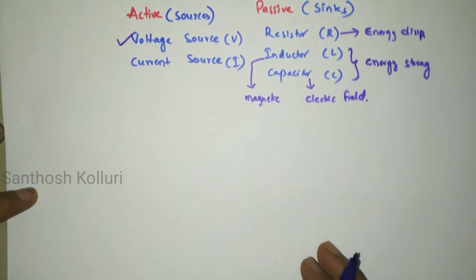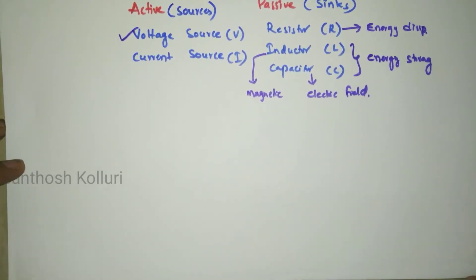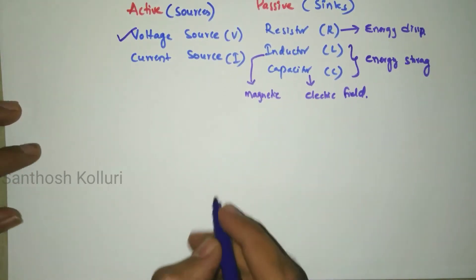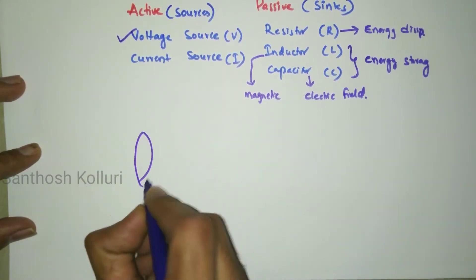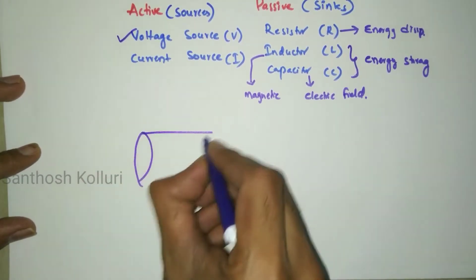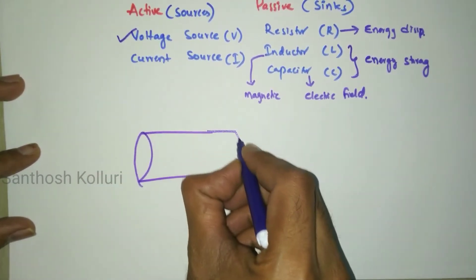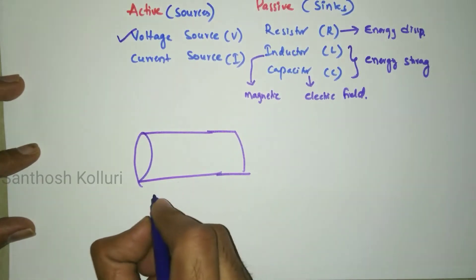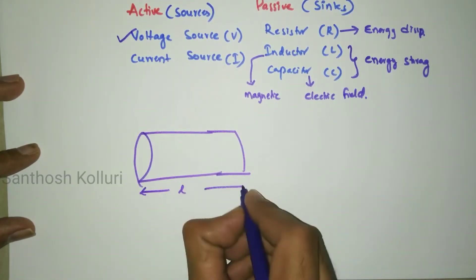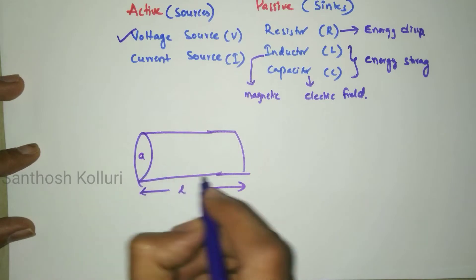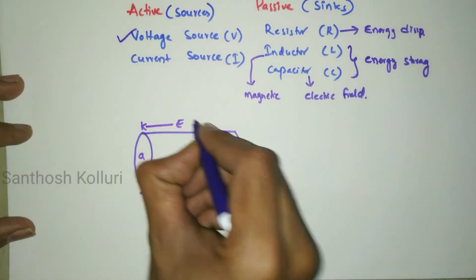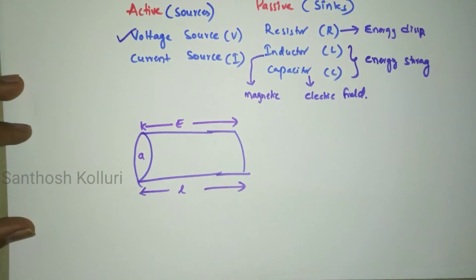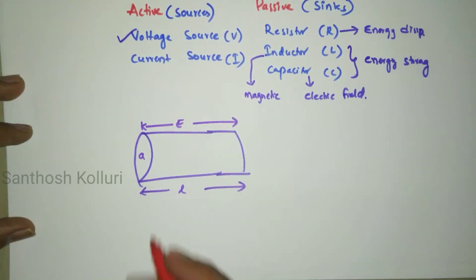We will now see the mechanism of electrical energy through the conductor. I will take a conductor having a length L and an area of cross section A, which is under electric field intensity E. The electric field intensity E is applied to the conductor.